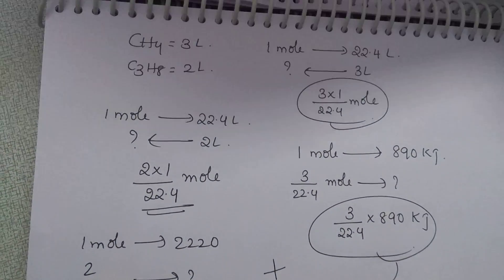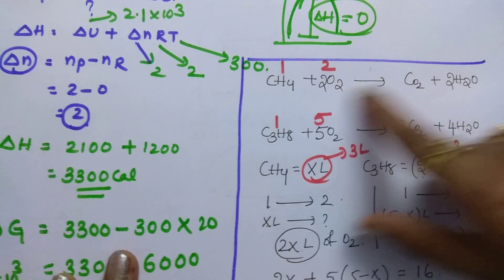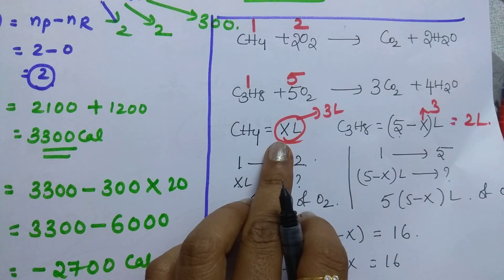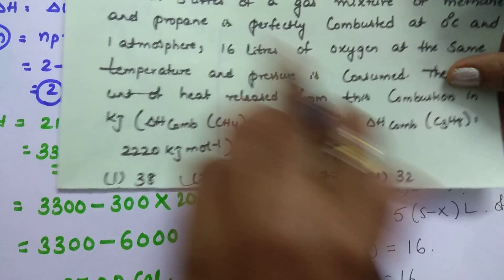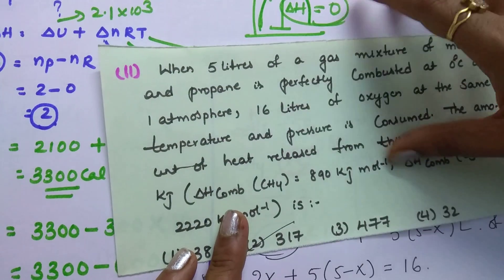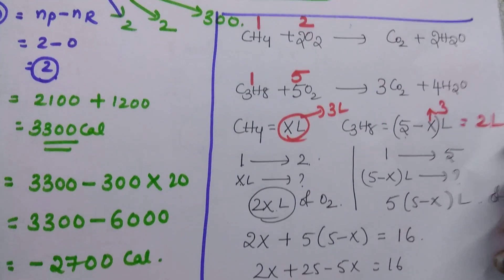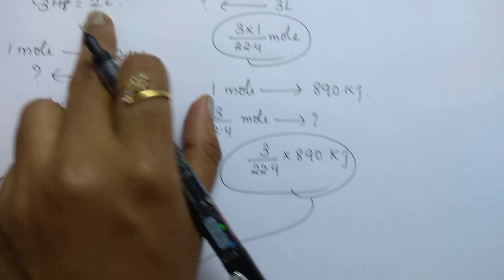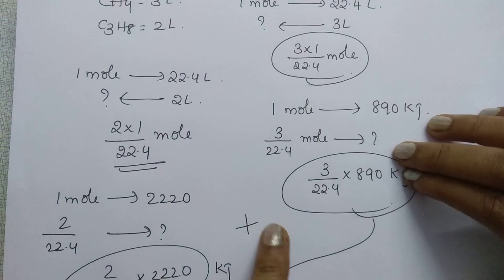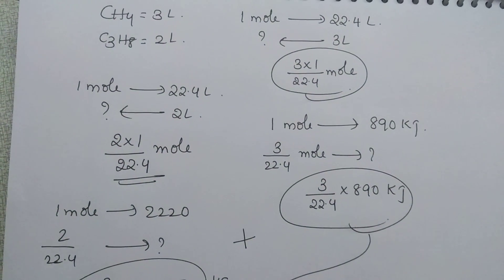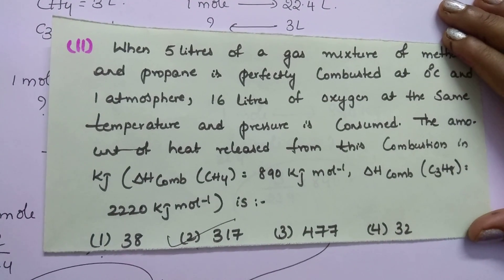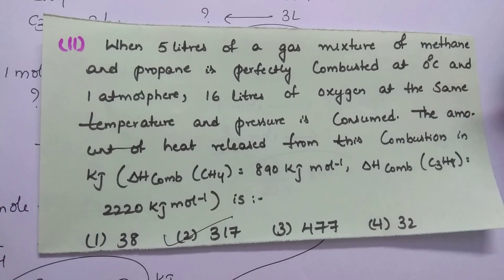To summarize this big problem: first write the standard balanced equations, then from the mixture find the individual liters of methane and propane present using the given oxygen volume. Convert liters to moles, then find how much energy is released using the given combustion data. I hope you liked this video — thanks for watching, and please give a like.